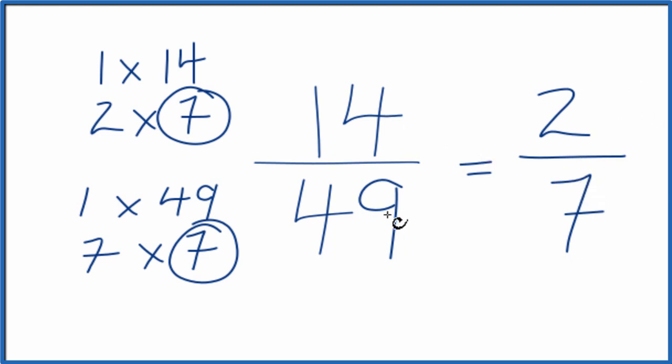If you divide 14 by 49 or 2 by 7, you'll get the same decimal number. These are equivalent fractions. We've just represented them differently. This is Dr. B. Thanks for watching.